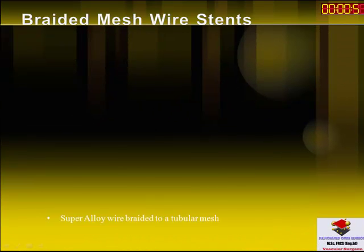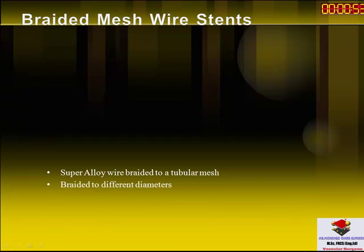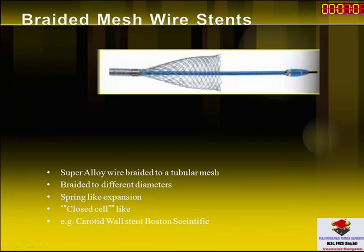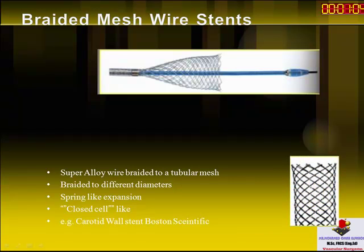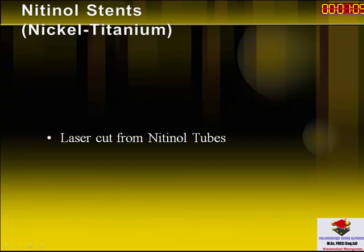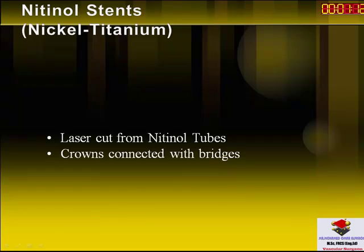Braided mesh wire stents are super alloy and are braided in different diameters. They have a spring-like expansion. A good example is the Carotid Wallstent by Boston Scientific, which has very good radial force.